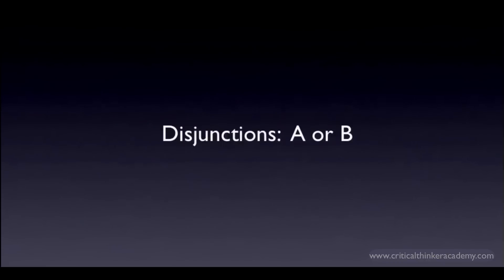You form a conjunction when you assert that two or more claims are all true at the same time. You form a disjunction when you assert that at least one of a set of claims is true. We'll look at the logic of disjunctive claims in this video.